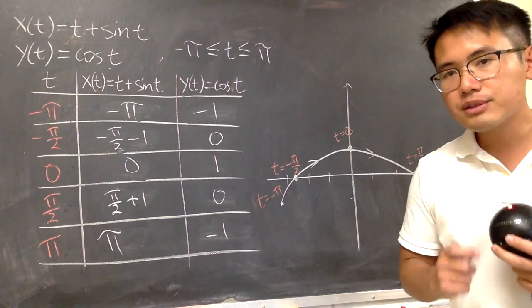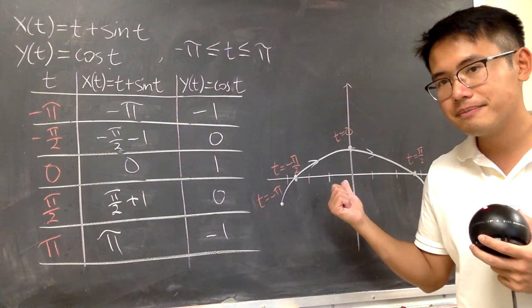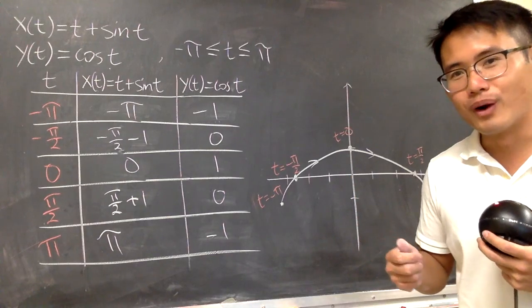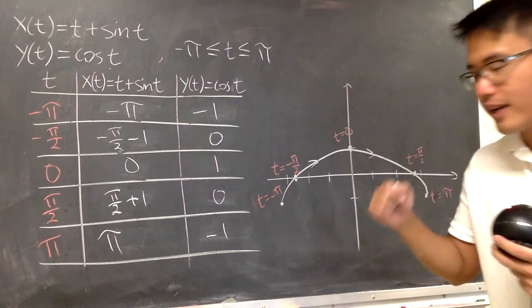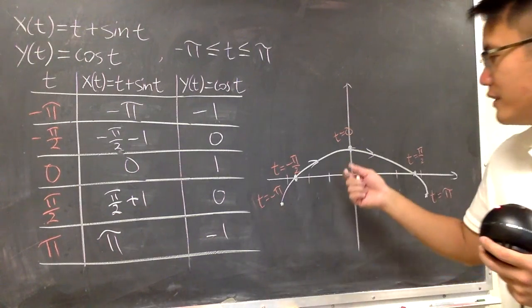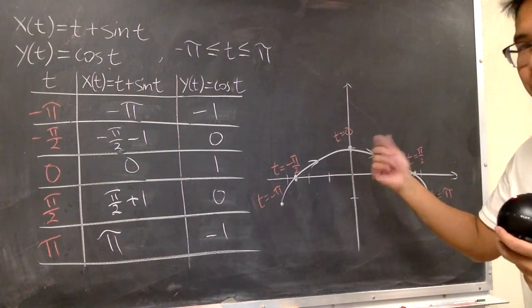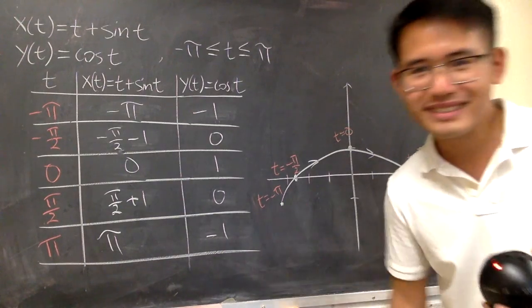And perhaps I can ask you guys, is this an ellipse, or what kind of shape is this, if you actually have more t values? Anyway, you guys can leave a comment down below and let me know if you have the answer to that, what kind of shape this is. Anyway, that's it. Thank you.